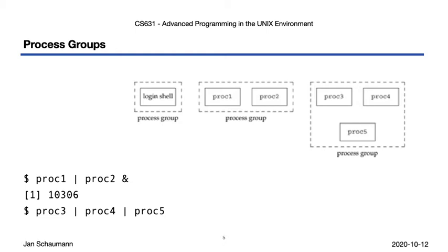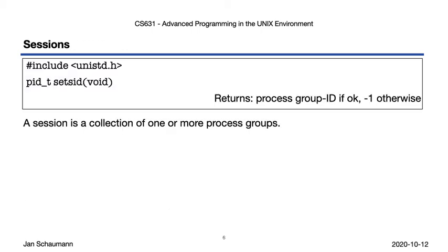Grouping processes together in this way makes sense, as we are interacting with the different processes in different ways. But still, all of these processes somehow belong together — they were all started as children from the login shell, and if we were to disconnect from the terminal, we would not be surprised to find that they all would be terminated because our login session was interrupted. And that is precisely what this collection of process groups is: a session. You can create such a session, such a collection of process groups, by calling setsid.